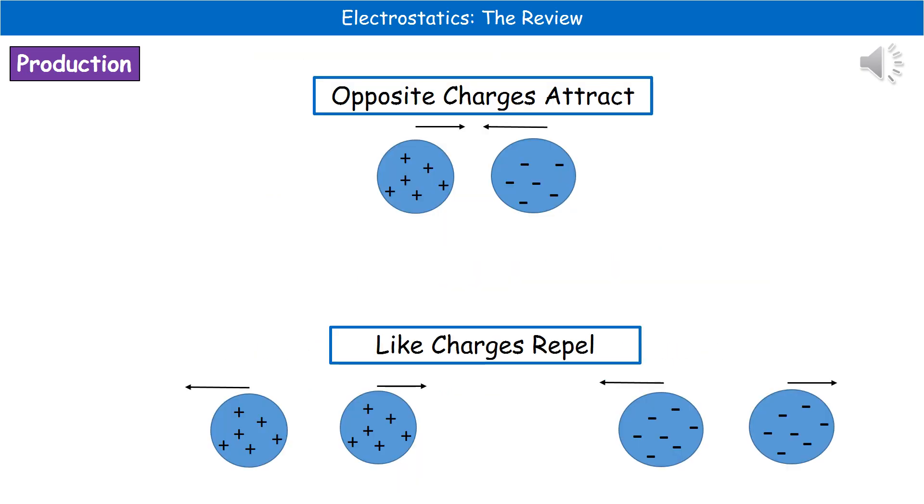Once we've established how these items become charged, we need to remember what happens when they interact. It's the old basic rule that opposites attract. If you have something positive and another object that's negative, they will attract and move towards each other. This is the example you could have seen with dust sticking on TV screens or bits of paper sticking on the van der Graff. If we have two objects that have like charges, the same charge, then they will repel from each other.